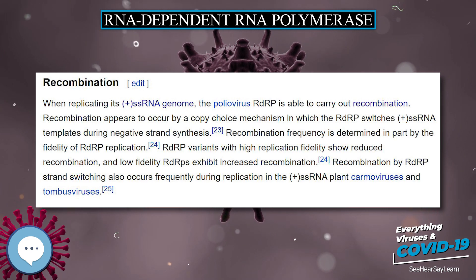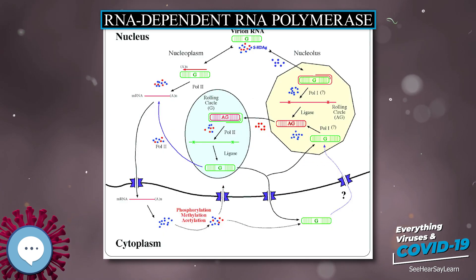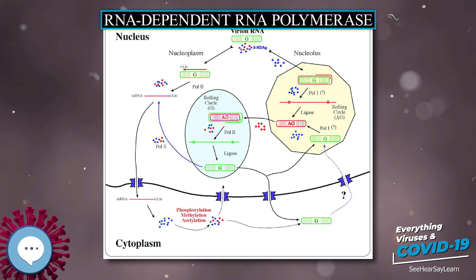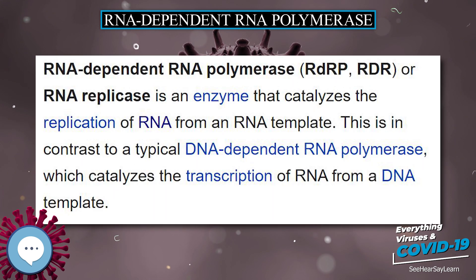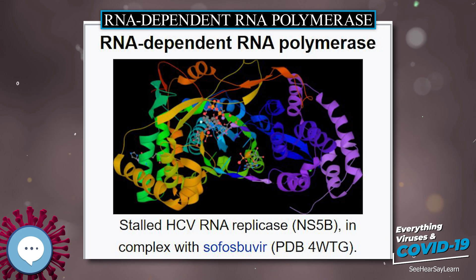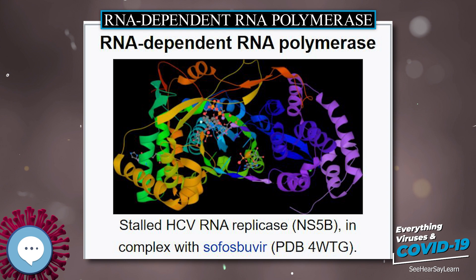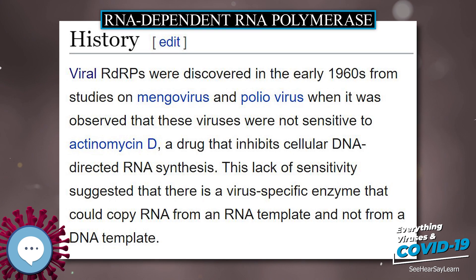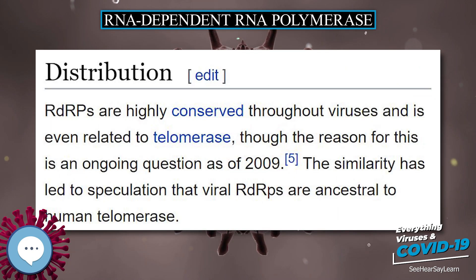History: Viral RDRPs were discovered in the early 1960s from studies on mangavirus and poliovirus, when it was observed that these viruses were not sensitive to actinomycin D, a drug that inhibits cellular DNA-directed RNA synthesis. This lack of sensitivity suggested that there is a virus-specific enzyme that could copy RNA from an RNA template and not from a DNA template.